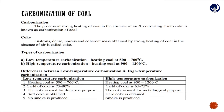Carbonization of coal is nothing but the process of strong heating of coal in the absence of air and converting it into coke. This is of two types: lower temperature carbonization and high temperature carbonization. Low temperature means heating coal at 500 to 700 degrees Celsius, and because of this, no smoke is produced.